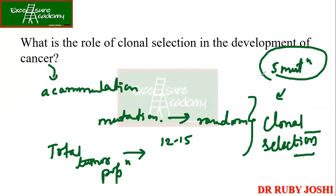I hope you have come to understand this answer. Please try to frame it properly, because I was just explaining and the sentences were here and there. You guys can prepare nicely — just frame your sentences properly. First understand what clonal selection is, and then you can explain the role of clonal selection in cancer development.